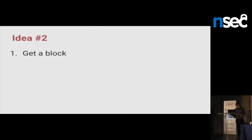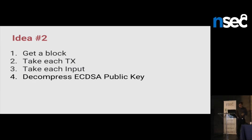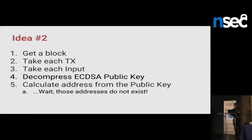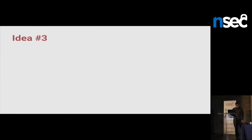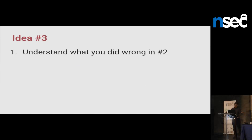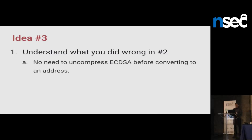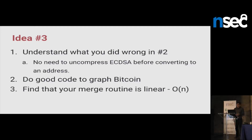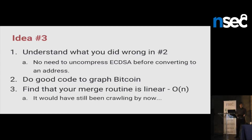Idea number two: get a block, take each transaction, take each input, decompress the public key in the input, calculate the address. Because the hash160 is just a hash of the public key. But wait — those addresses don't exist. All the addresses I calculated were never existing. I did something wrong there. Tables flipped again. So: understand what you're doing wrong in number two — before converting to hash160, you don't have to compress the public key. And do good code to grab the Bitcoin: object-oriented, linked list, Python, good clean code, easy to follow. It was my best 100 lines of code. Find that your merge routine is linear. And I would still be crawling by now if I hadn't stopped the program.